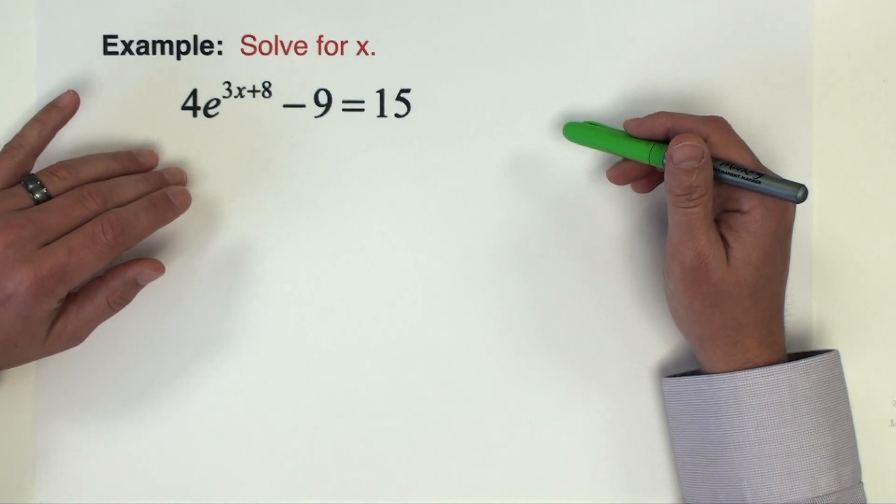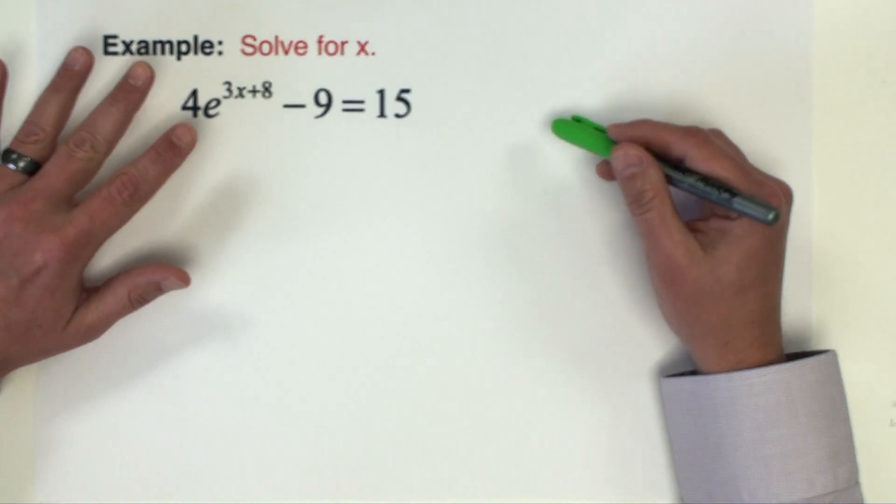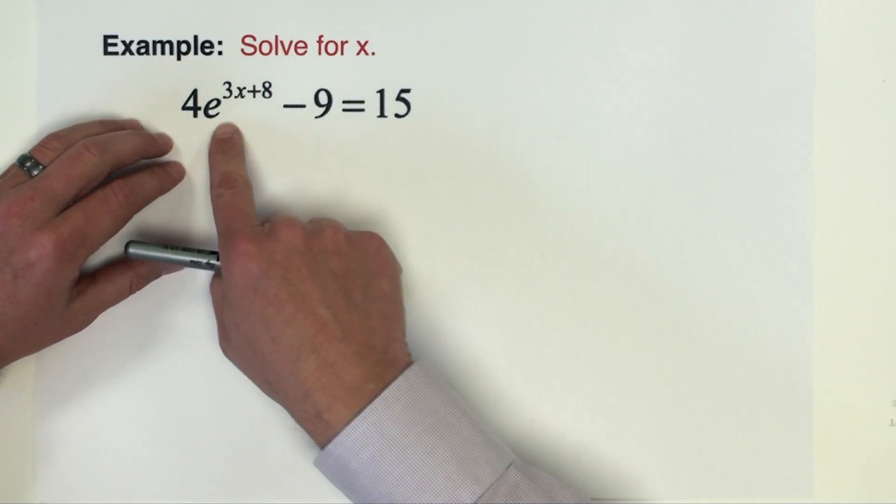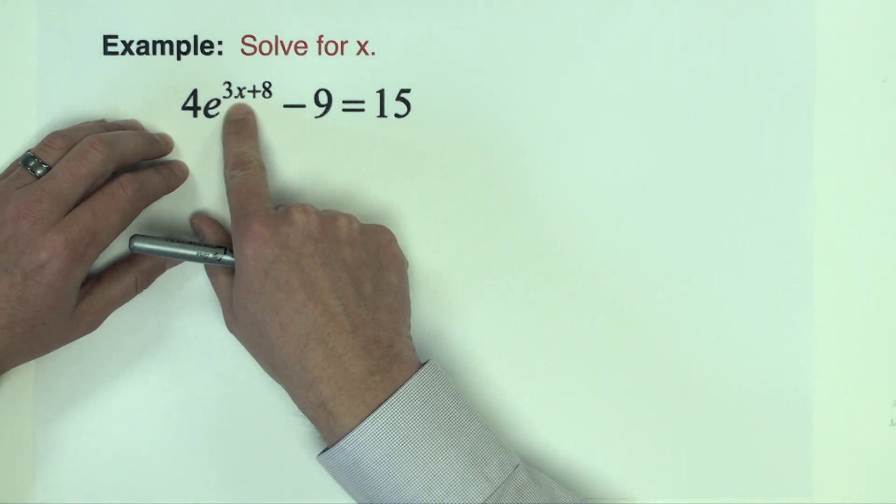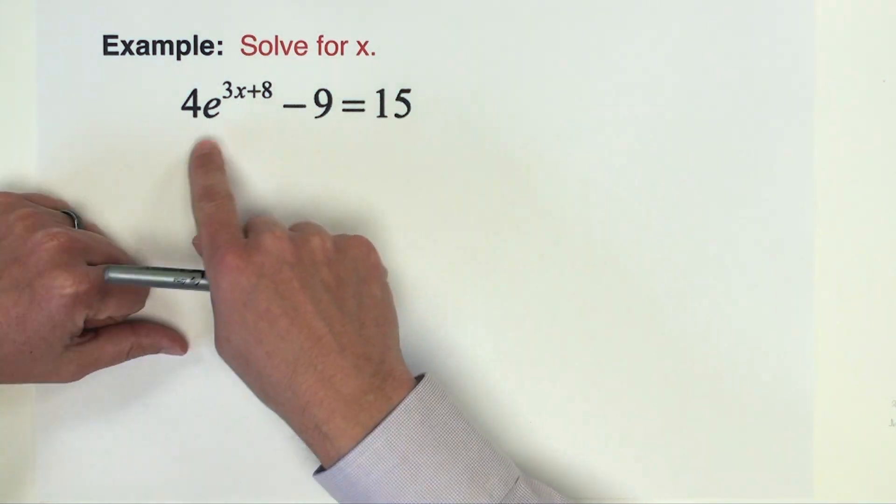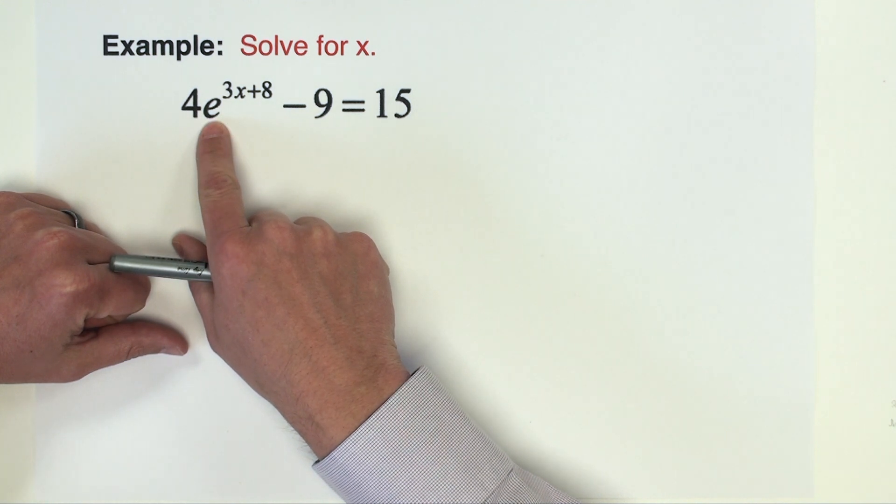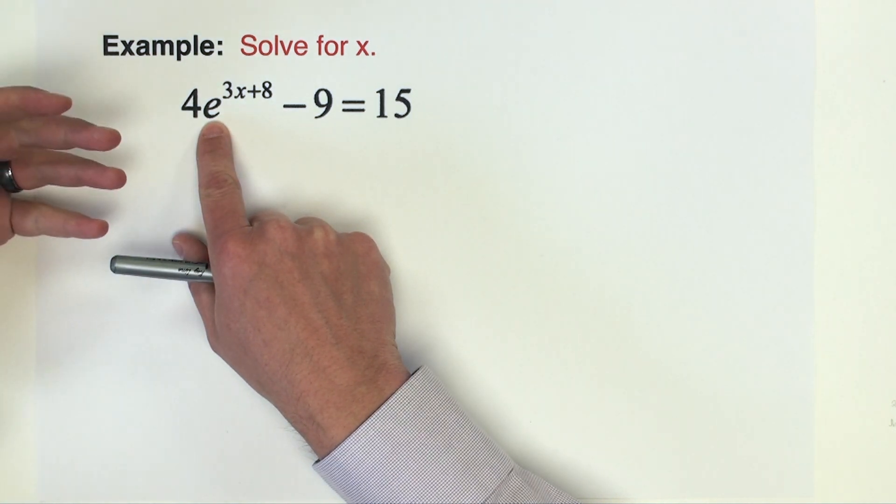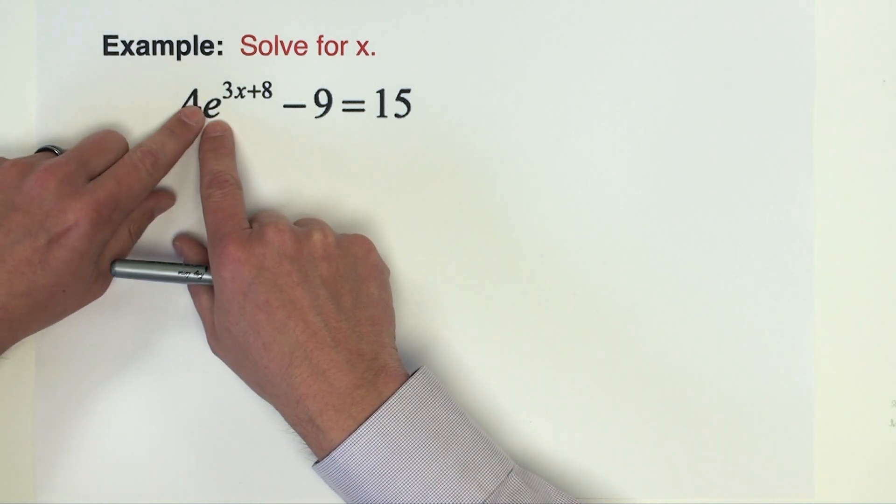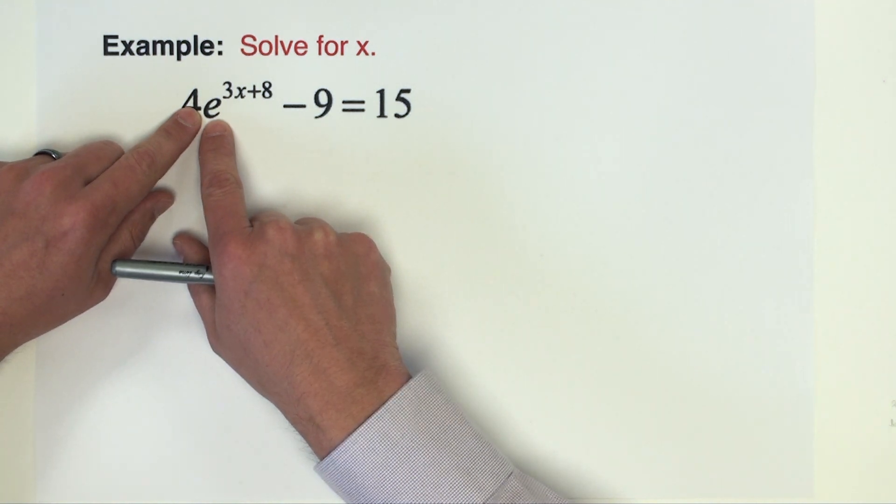Okay, this first example problem you can see just kind of at the outset how it looks a little bit different than the other problems. Similar in that the variable we're solving for is in the exponent. Different in that the base is base e. It's not like two or three or a different base here. We have the natural base e in play in this equation.